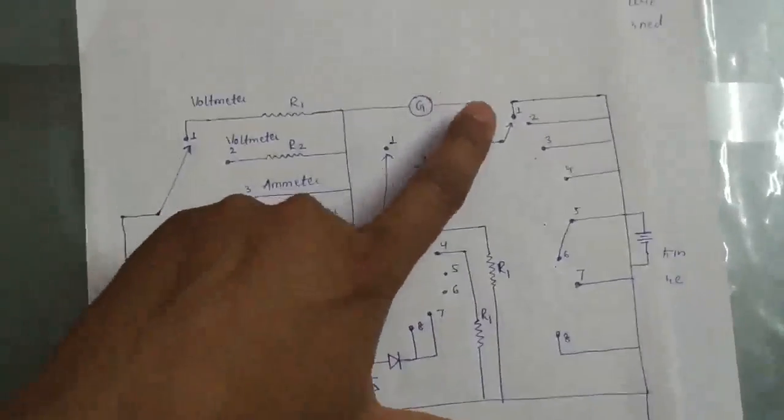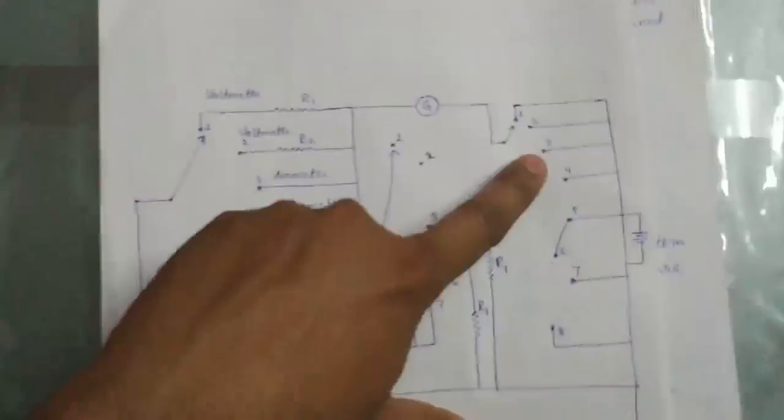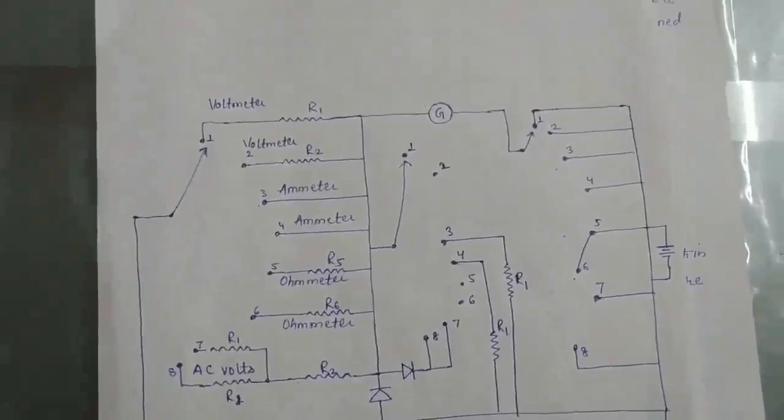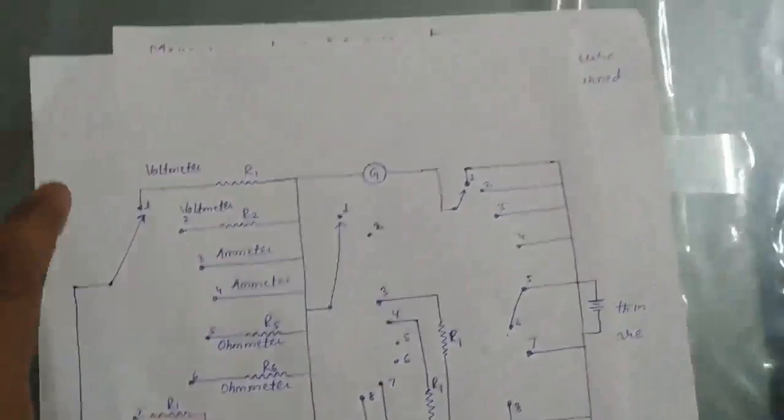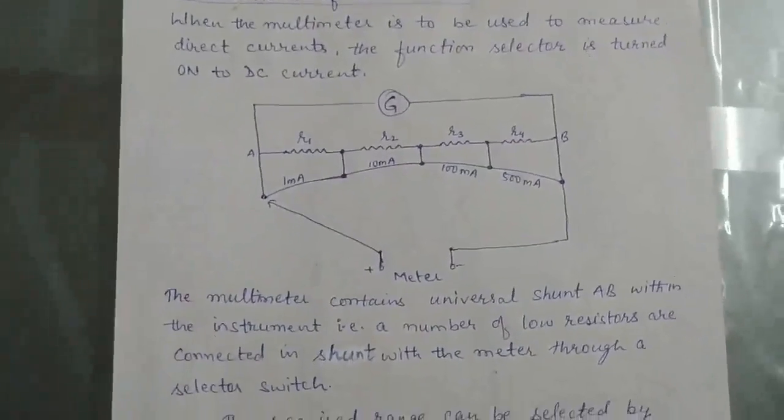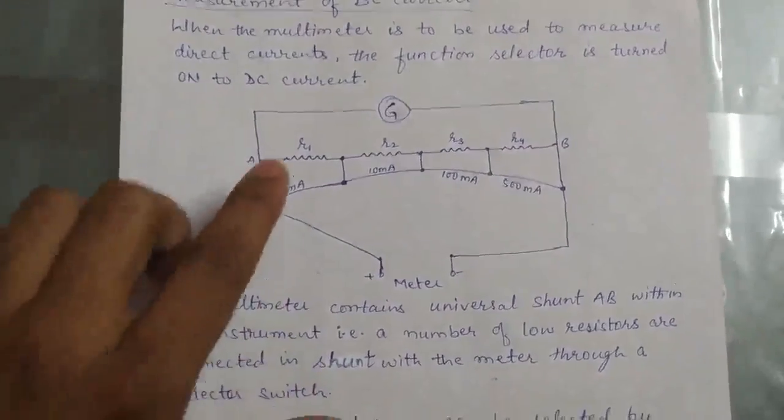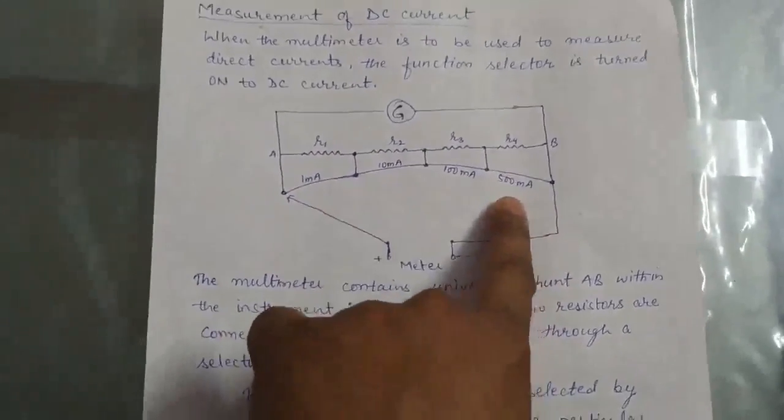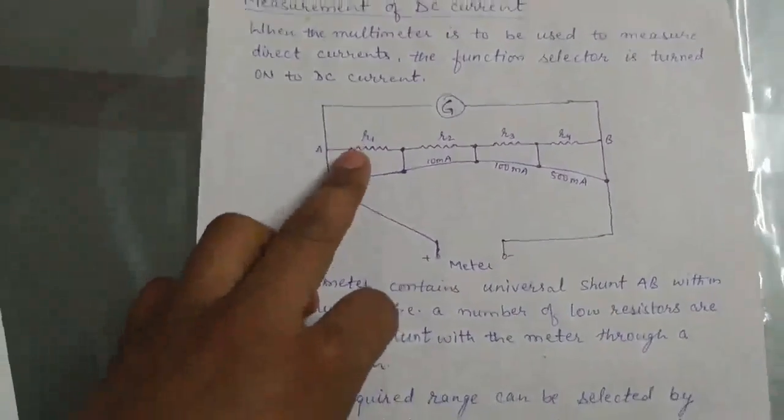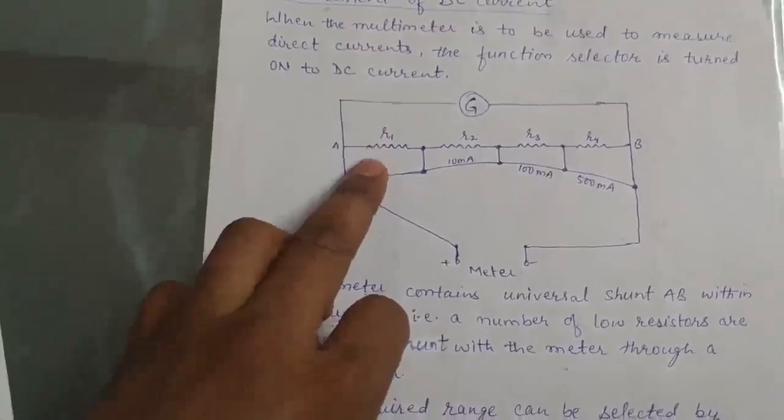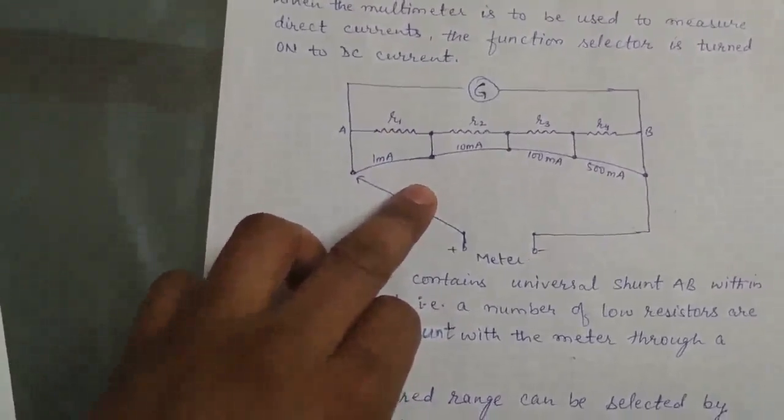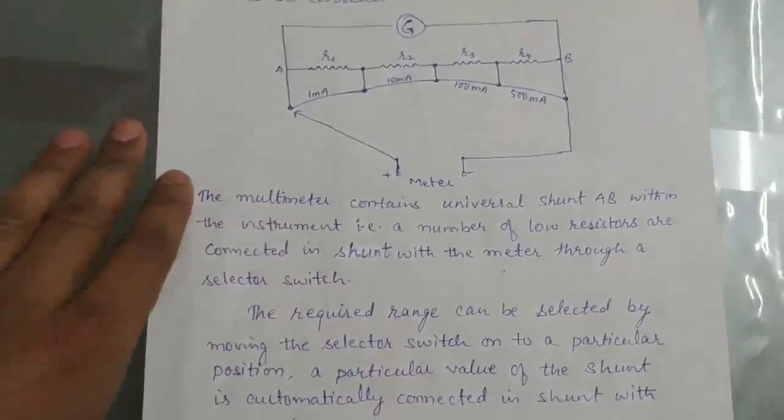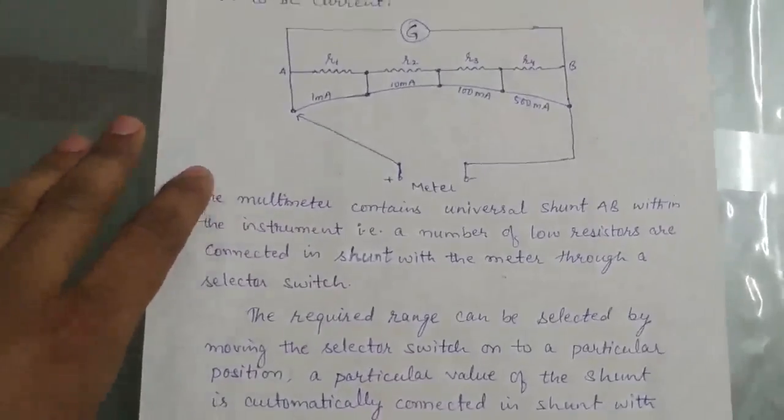This switch is connected to the third point. Now the proper circuit is formed. These are the shunt resistances across the ammeter range. These shunt resistances extend the range of the ammeter. The remaining part is similar to DC voltage.